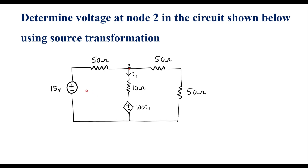We can observe that the 15 volt source is in series with the 50 ohm resistor. Let me convert this voltage source into a current source. We know that I = V/R. V is 15 and R is 50, which gives 0.3 amps. So I will connect a current source of magnitude 0.3 amps.